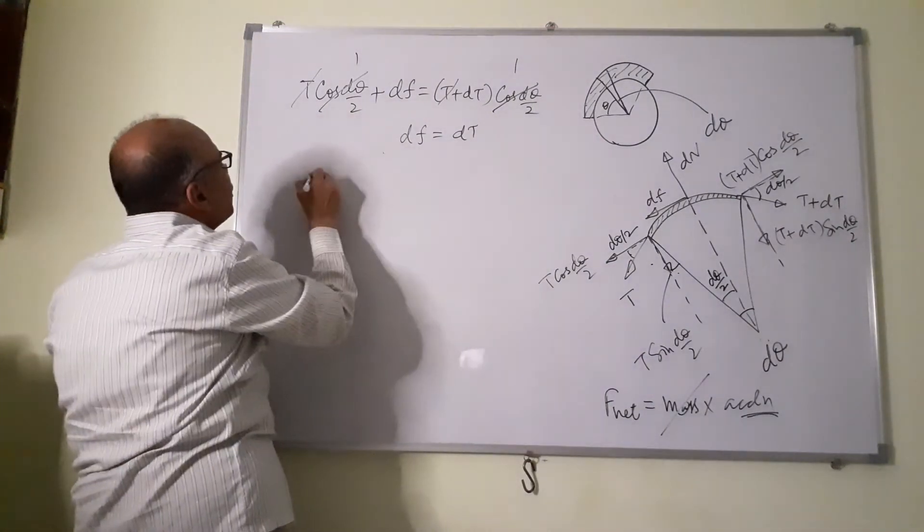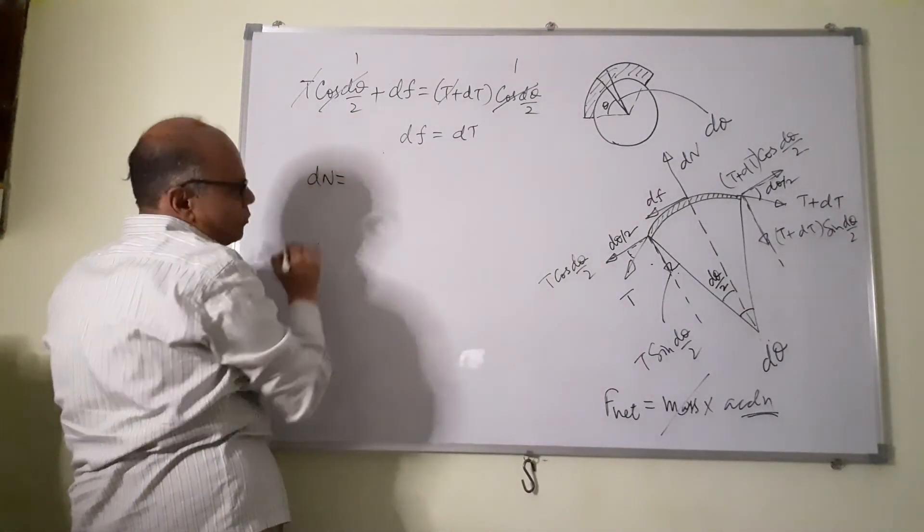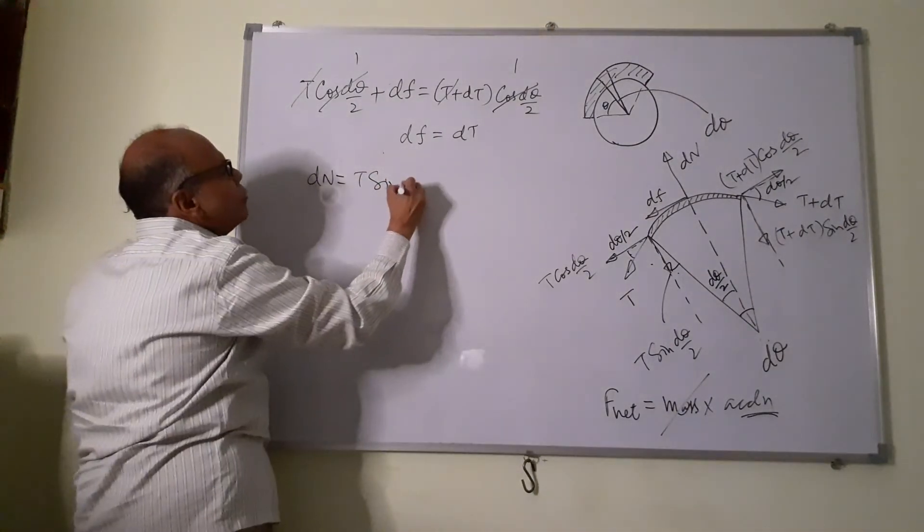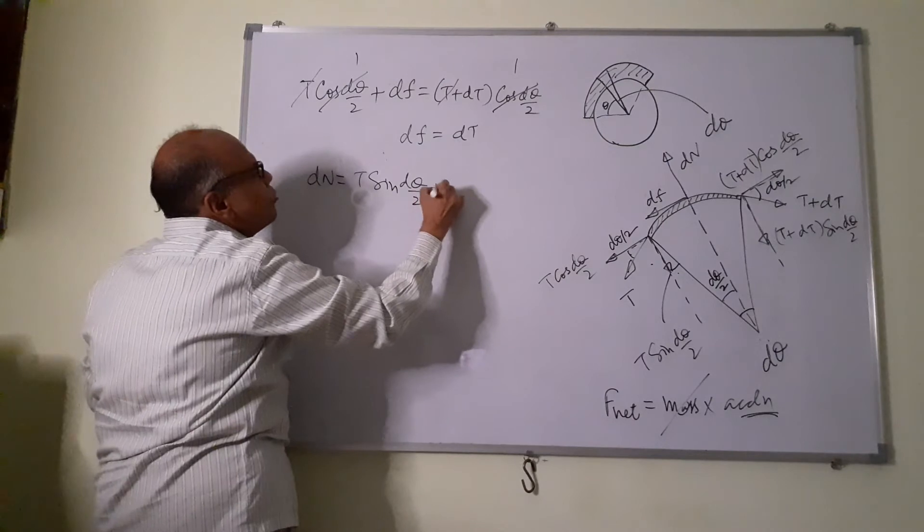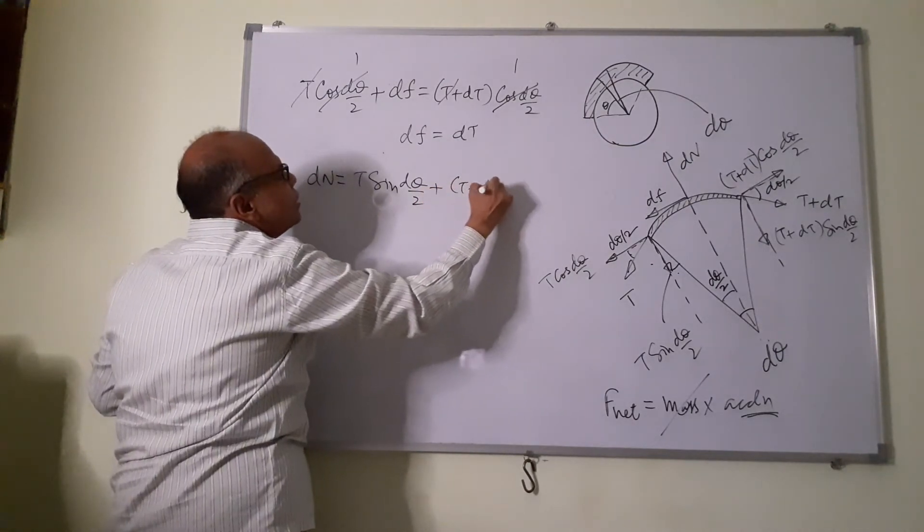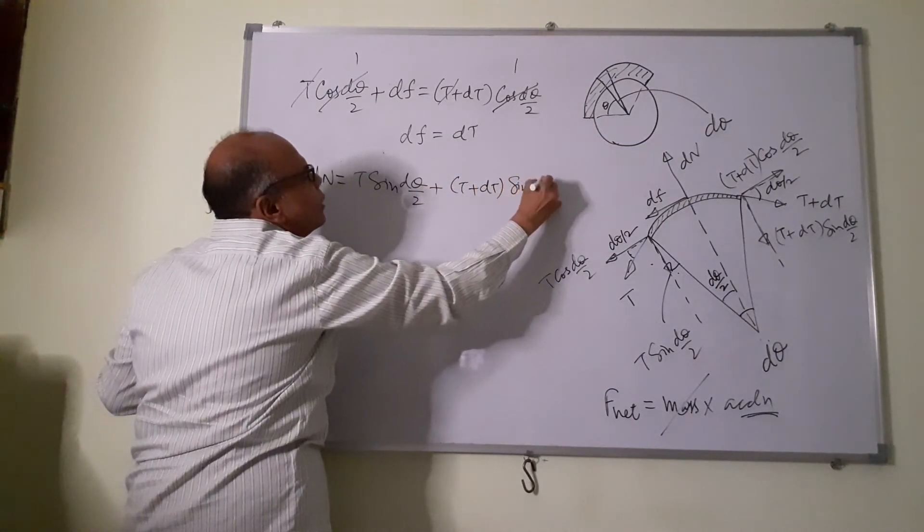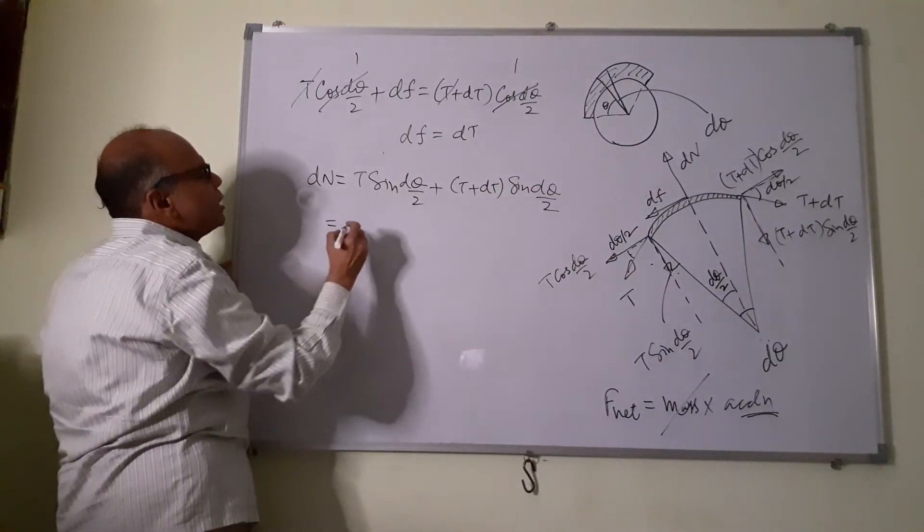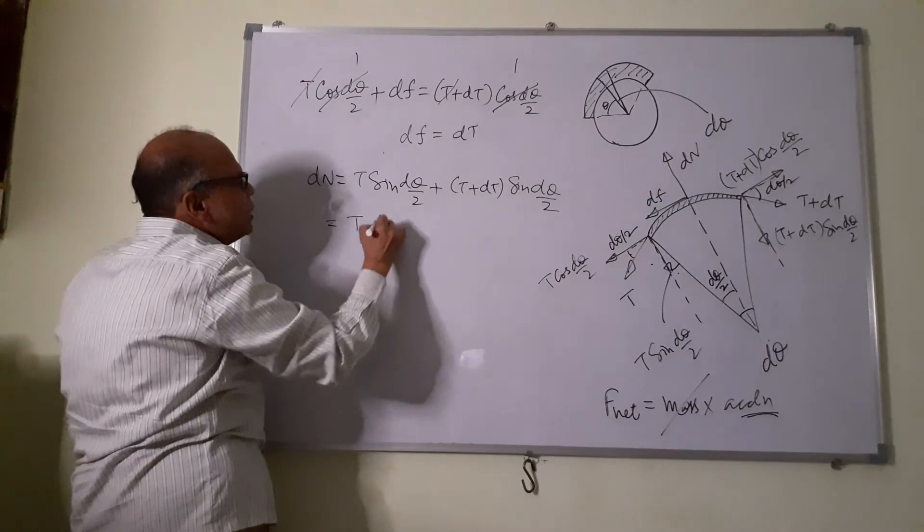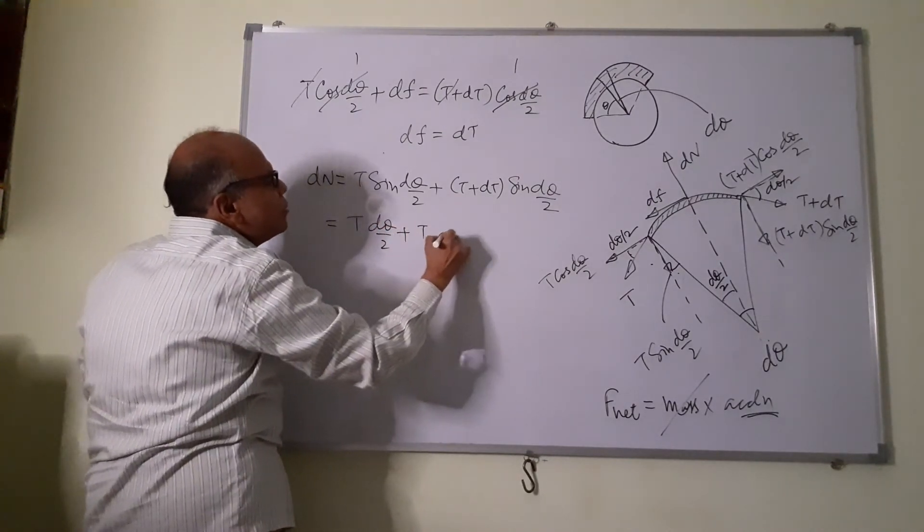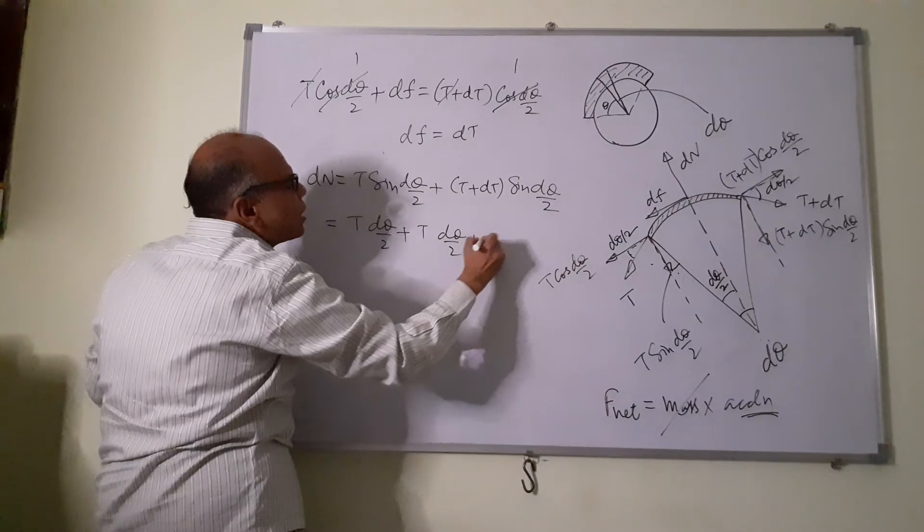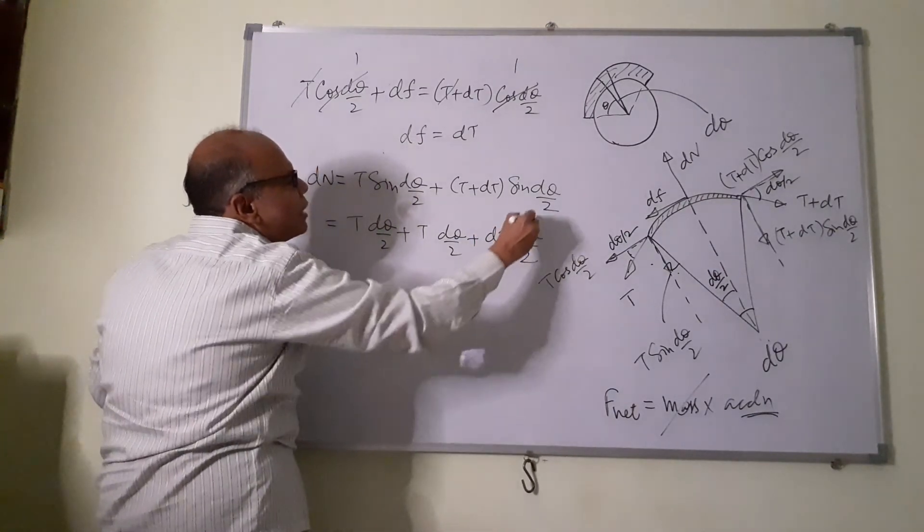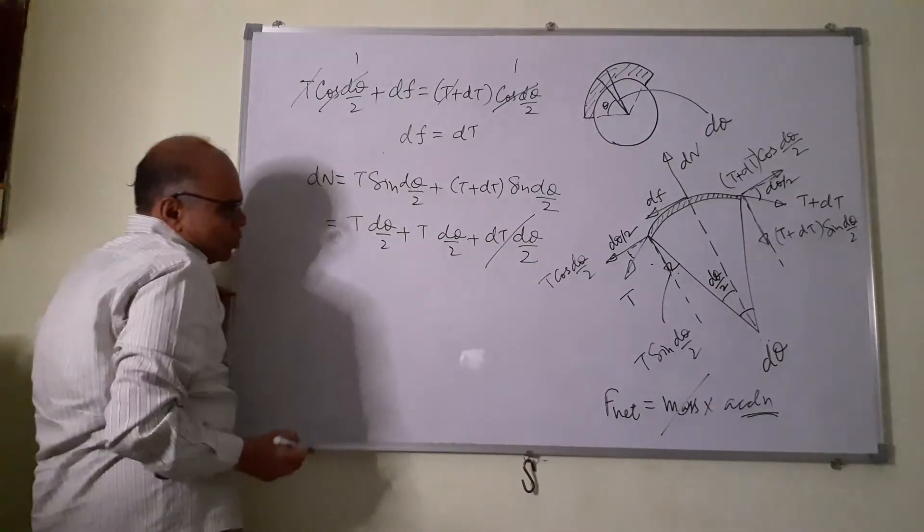Along the normal, Dn will be equal to T sin D theta by 2 plus T plus Dt sin D theta by 2. For small angles sin theta equal to theta. So I have T d theta by 2 plus T d theta by 2 plus Dt d theta by 2. We can neglect this because both are infinitely small.